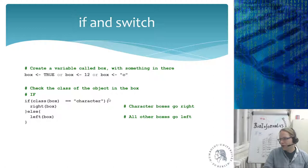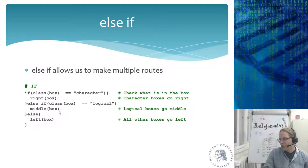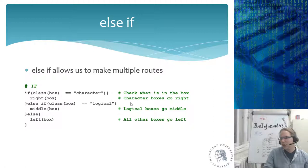The if statement is structured with the keyword 'if', then round brackets — everything between the brackets is evaluated to a logical value. It tests if the class of the box equals character, then sends the box right; otherwise it sends it left. You can also use else-if for multiple routes: if class is character send right, else if class is logical send to a middle function, else call the left function. You don't have to test on class — you could check if the box contains the value five.